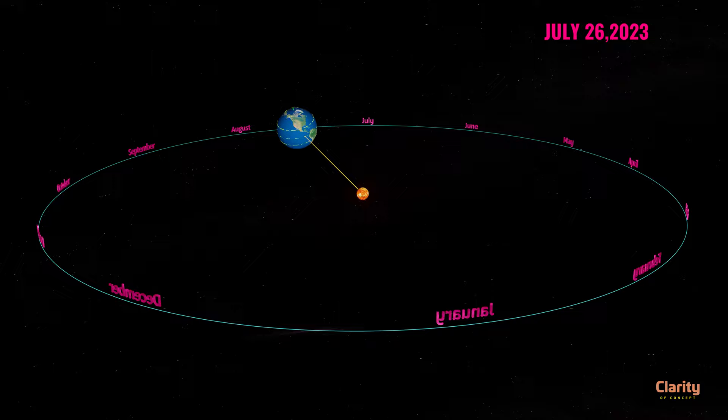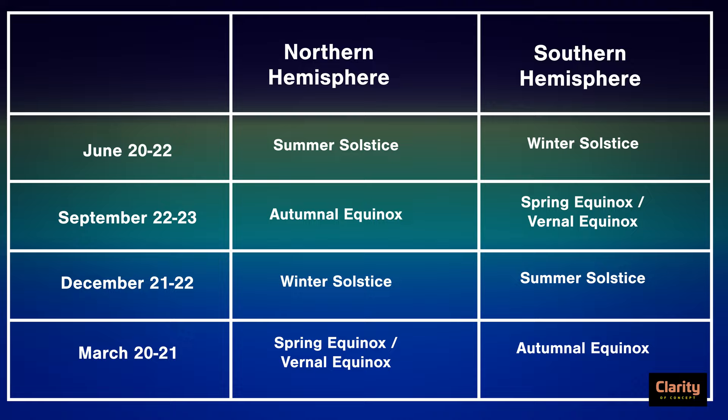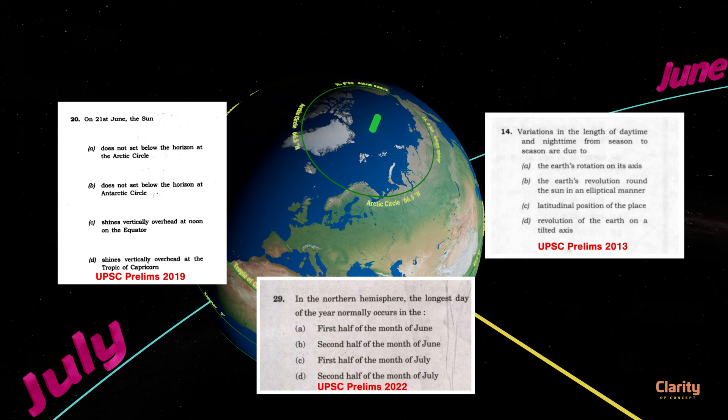These dates slightly change sometimes — take a screenshot of this table. Watch our next upcoming video about twilight and dawn, which impact visibility of sun and daylight. Coming back to the questions we showed in the beginning, we are sure you will be able to answer them after watching this video two to three times. Thank you for watching and subscribe to our channel Clarity of Concept.